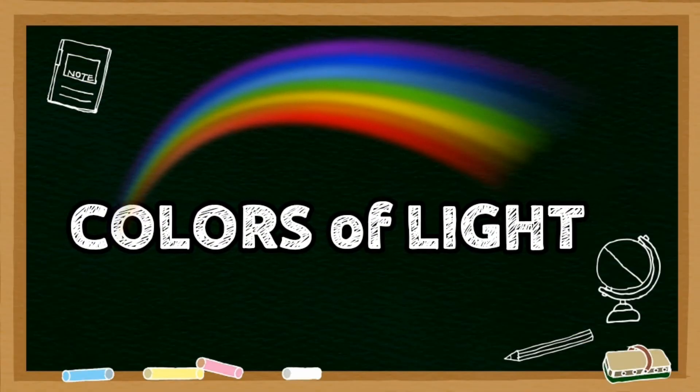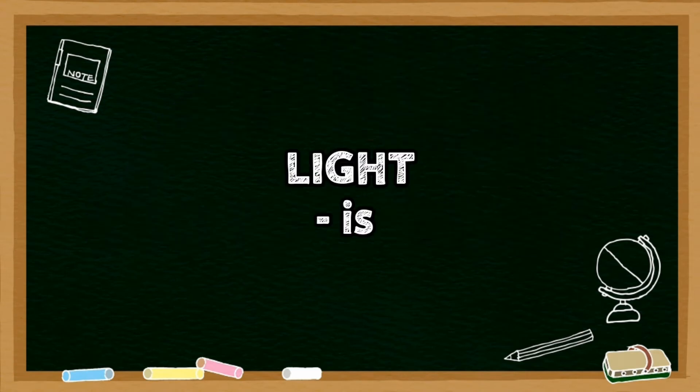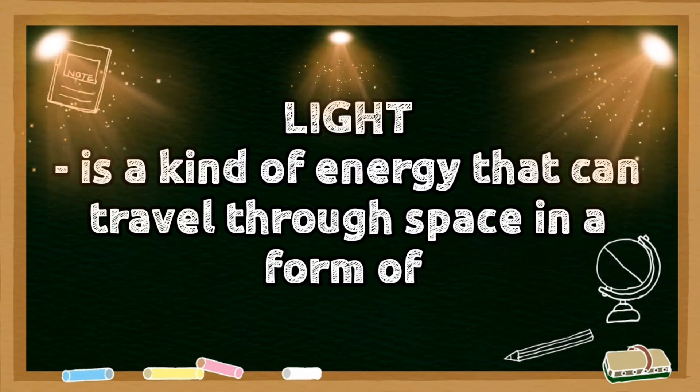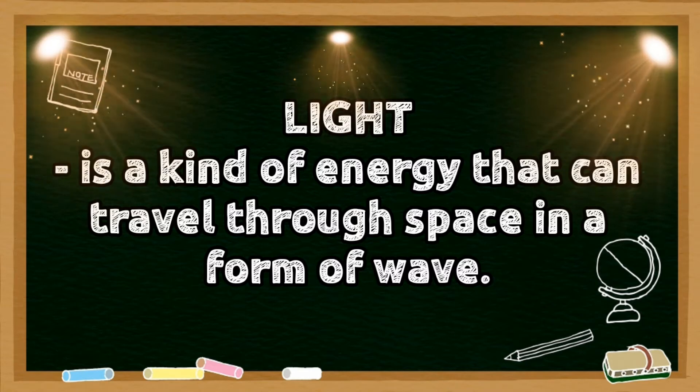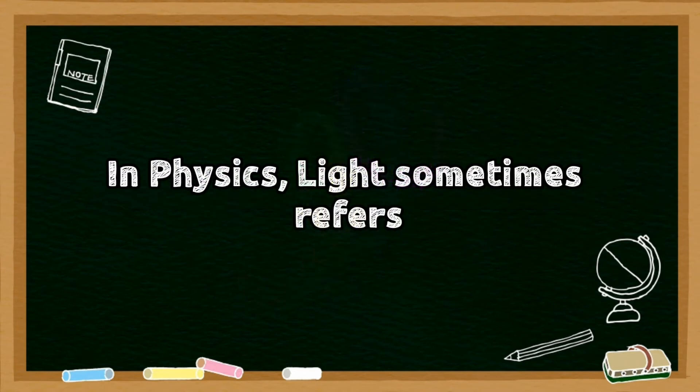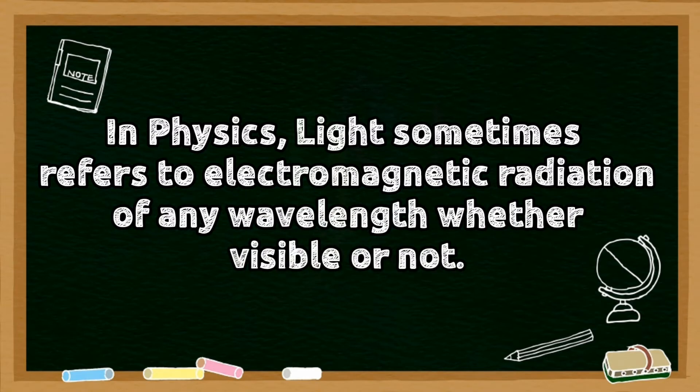Today's lesson is about colors of light. Light is a kind of energy that can travel through space in a form of wave. In physics, the term light sometimes refers to electromagnetic radiation of any wavelength, whether visible or not.